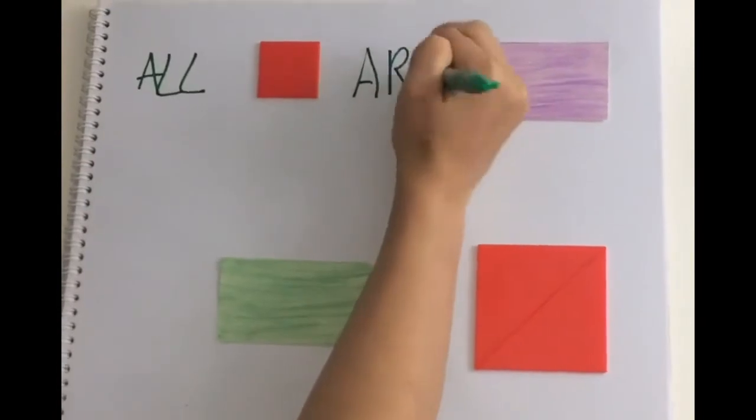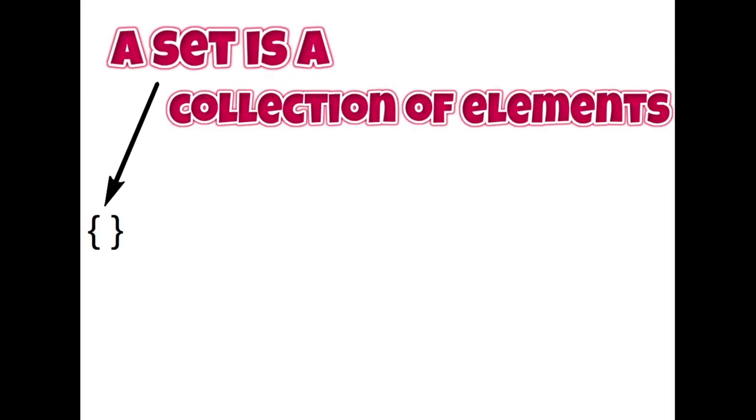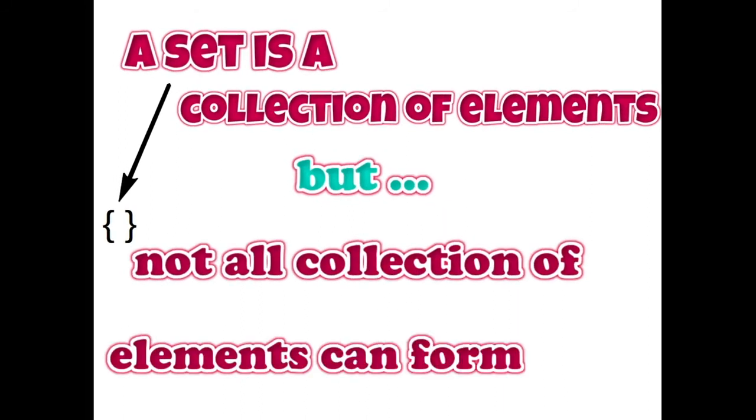You know how all squares are rectangles, but not all rectangles are squares? Similarly, a set can be defined as a collection of elements, but, as we will soon see, not all collection of elements can form a set.